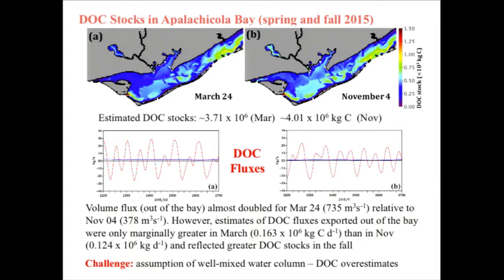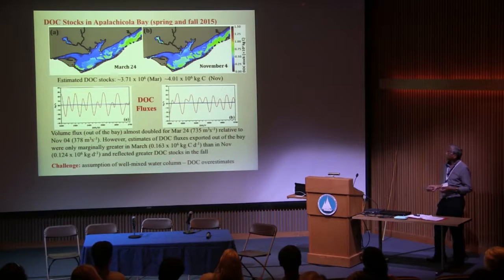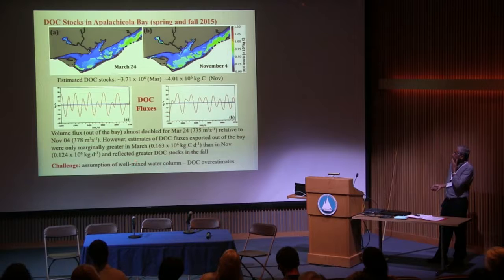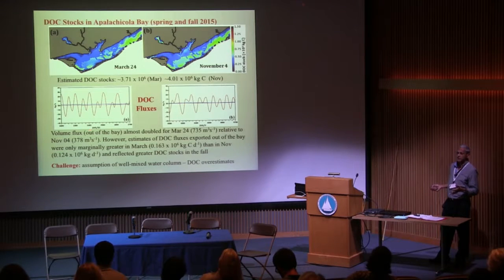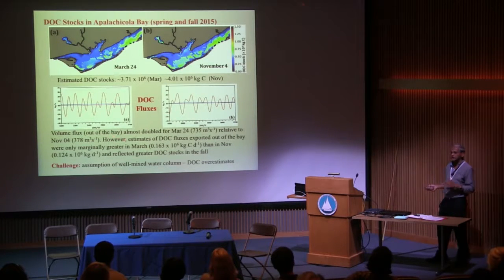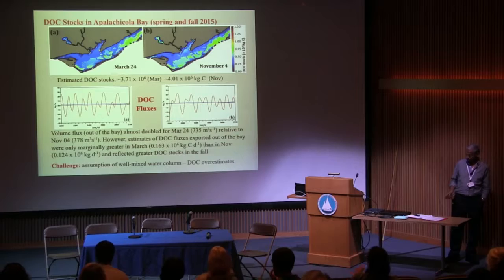We used satellite-based DOC concentrations to calculate the fluxes. One of the assumptions is a well-mixed water column, which could result in some overestimates of DOC fluxes in this study. These calculated fluxes are quite high — we found they represent almost 7% in the spring and 21% in the fall of the mean 100-year flux that has been calculated for the Mississippi River. Thank you.